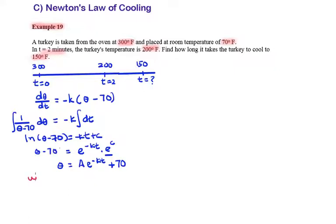Now, we are going to find the value of A. When t is 0, θ is equal to 300. Substitute θ as 300 equals A e raised to the power negative K times 0 plus 70. 300 minus 70 is equal to 230 is equal to A.